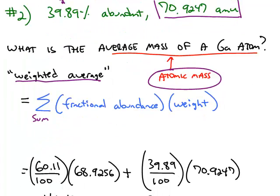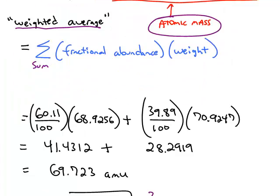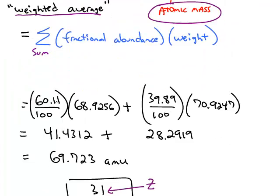So for example, for gallium, 60.11%, we can turn that into a fraction by dividing by 100, and then we multiply by its weight, 68.9256 atomic mass units.